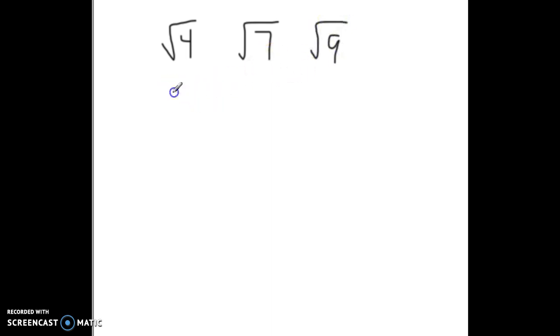So we know that the square root of 4 is 2. We know the square root of 9 is 3. So that means the square root of 7 is somewhere between 2 and 3.